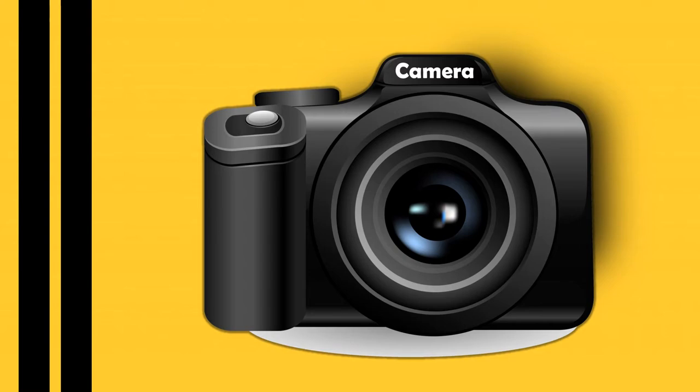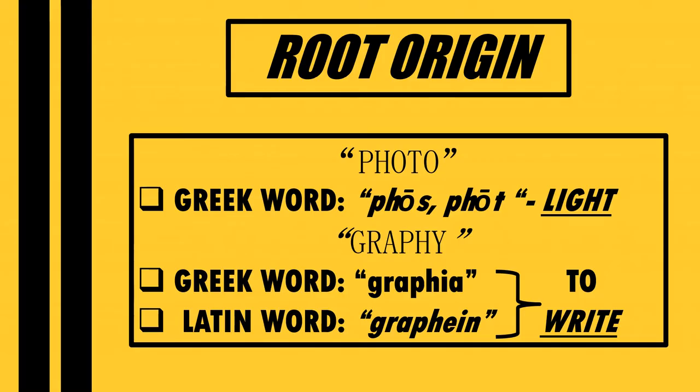What is photography? Let's see the etymology of photography. It came from two words: photo and graphi. Photo came from the Greek word phos or phot, which means light. And graphi came from the Greek word graphia or Latin word graphene, which means to write. If you combine them, it means to write something with light. And in some books, the idea of it is the shutter sound or flash of the camera.